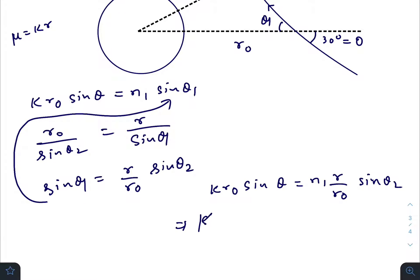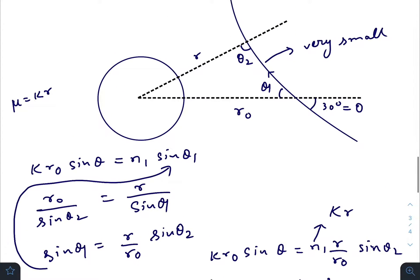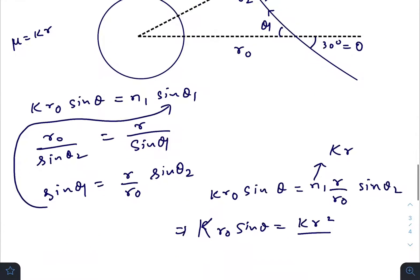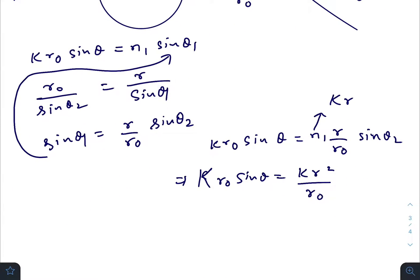So k r naught sine theta equals k r squared divided by r naught times sine theta 2, because n1 can be written as k r, since this point and this point are very close to each other. Finally, r squared equals r naught squared times sine theta divided by sine theta 2.